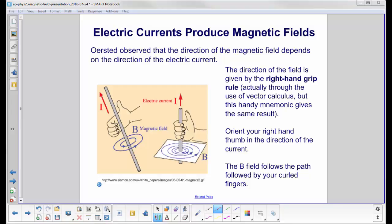Oersted observed that the direction of the magnetic field depends on the direction of the electric current. That's because the magnetized needle swung different ways, 180 degrees out, depending on which way the current was going.